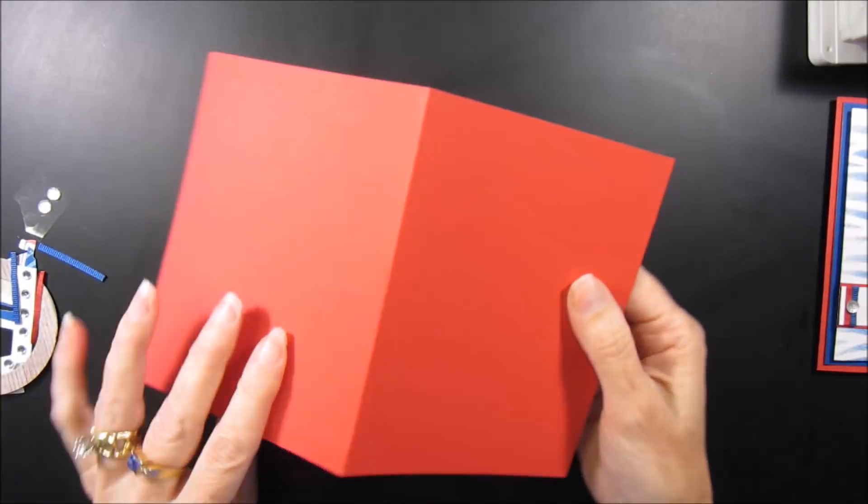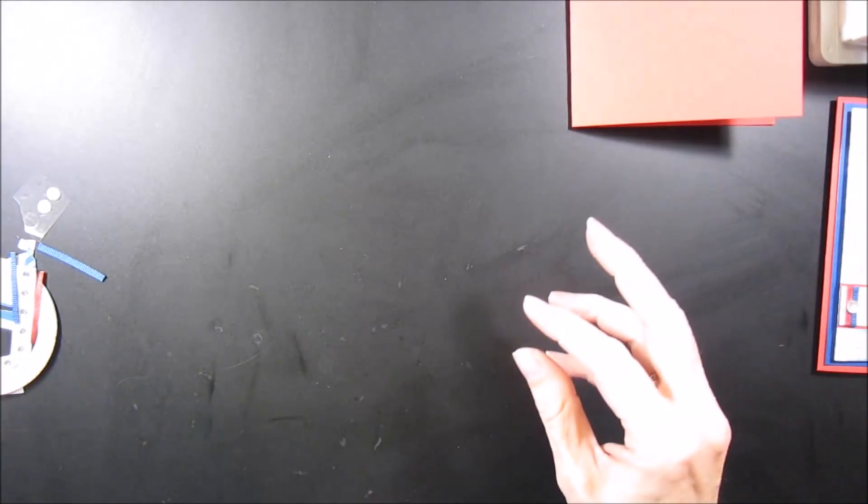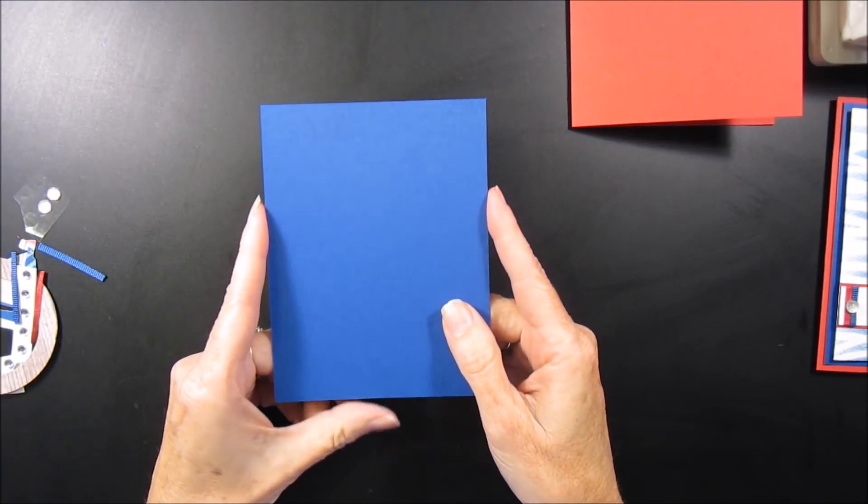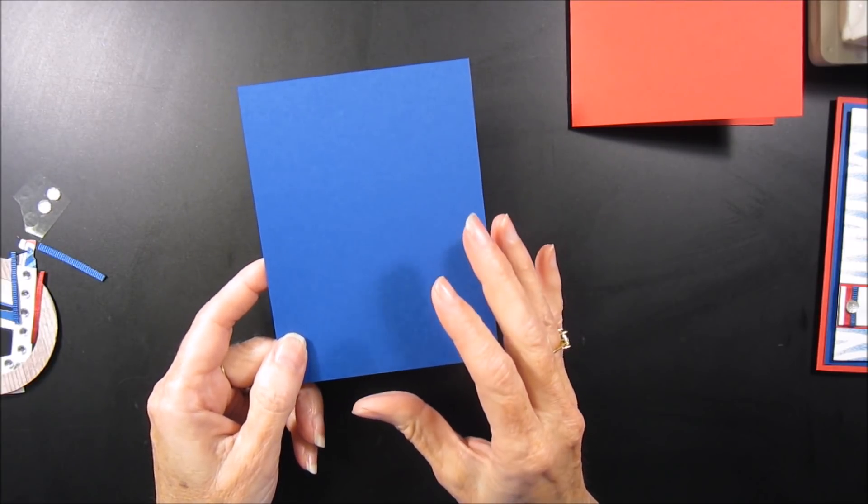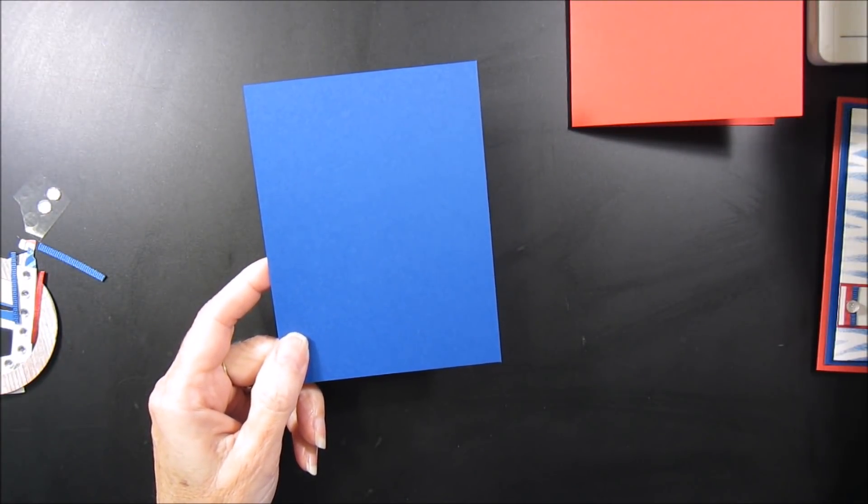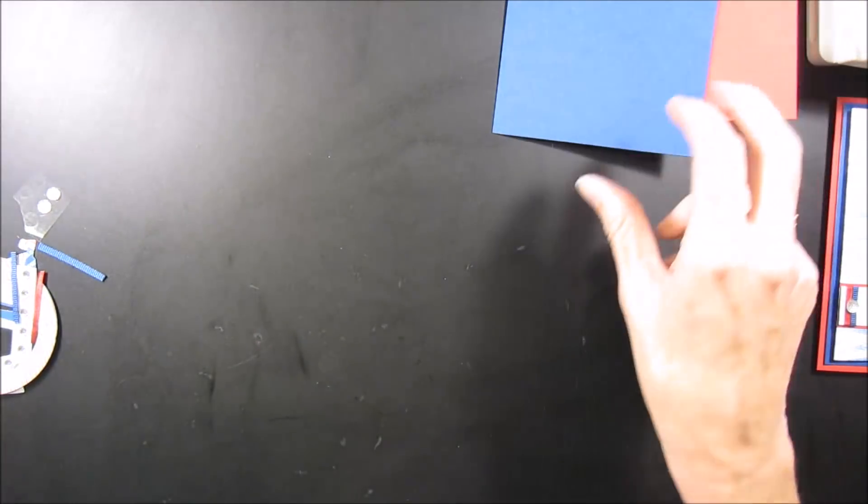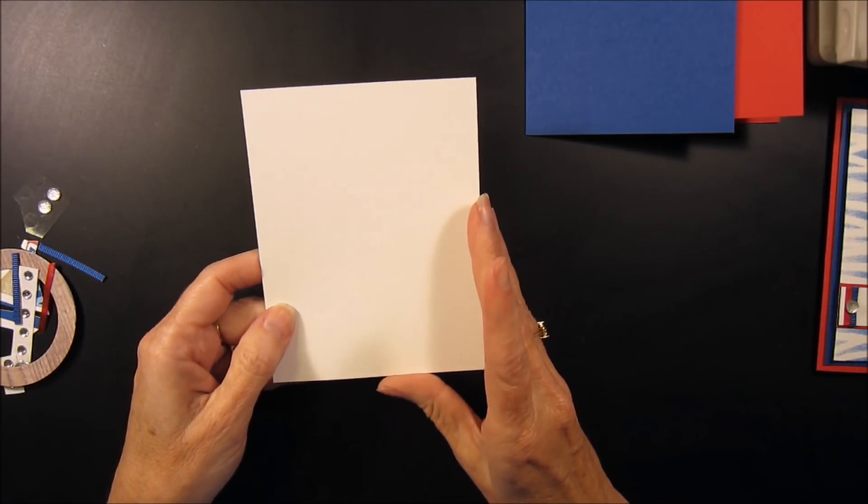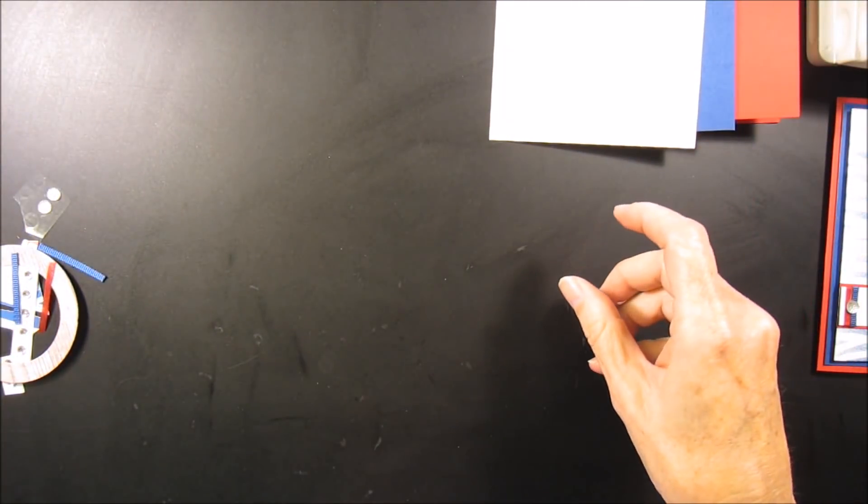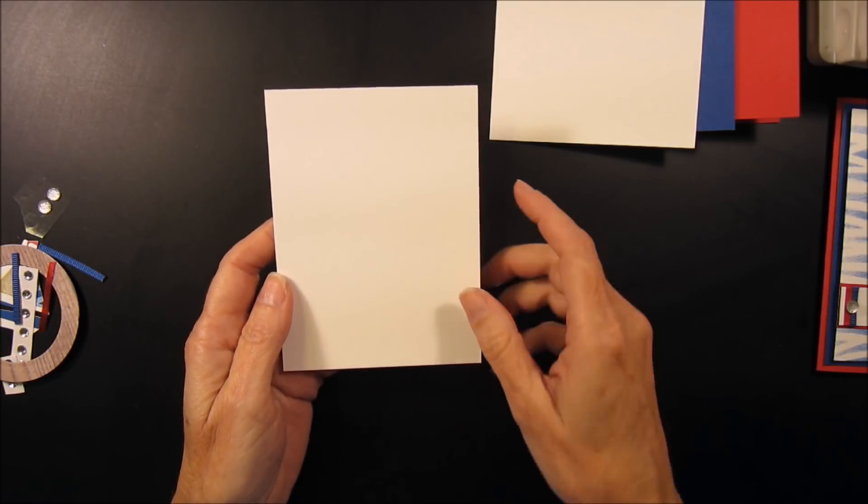For your card stock you'll need a piece of real red that is eight and a half by five and a half for your card. I have a piece that is four by five and a quarter of the new in color blueberry bushel, and I think it's just a really pretty blue. You will need a piece of whisper white that same size, four by five and a quarter for inside your card, and on the front of your card you'll need whisper white that measures three and three quarters by five.